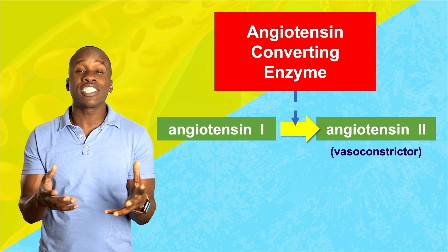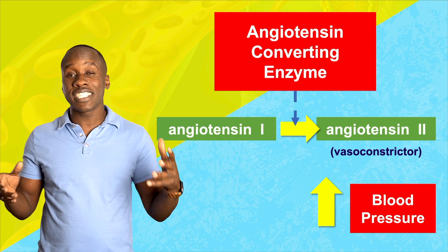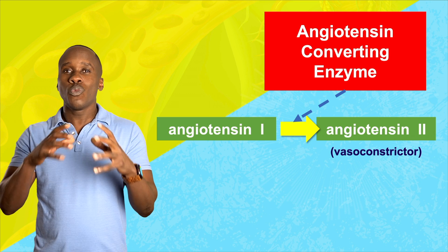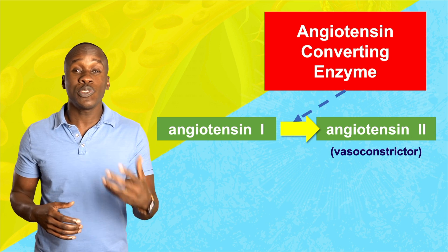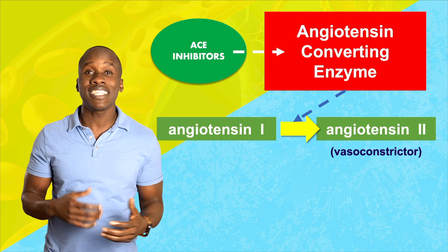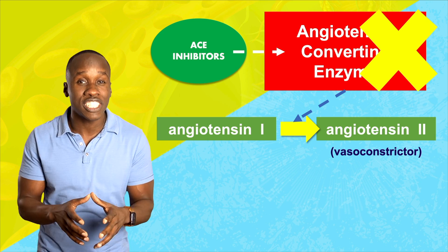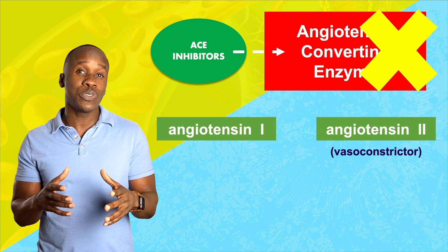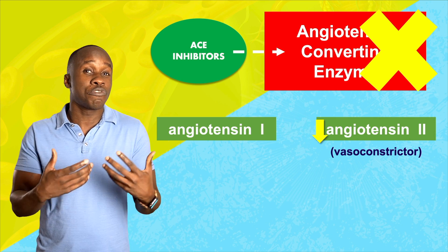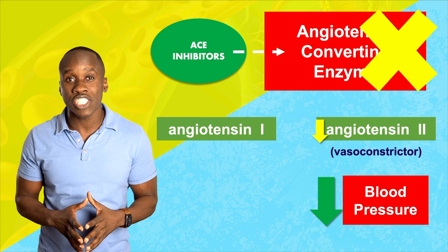Vasoconstriction has the result of increasing blood pressure. As you would imagine, if a person has high blood pressure, you want to do what you can to reduce it. ACE inhibitors will inhibit the angiotensin-converting enzyme so that the production of angiotensin-2 is reduced, and that will reduce vasoconstriction and help to lower blood pressure.